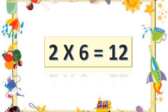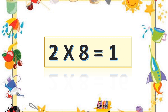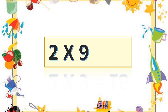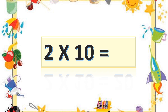Two sixes are twelve. Two sixes are twelve. Two sevens are fourteen. Two sevens are fourteen. Two eights are sixteen. Two eights are sixteen. Two nines are eighteen. Two nines are eighteen. Two tens are twenty. Two tens are twenty.